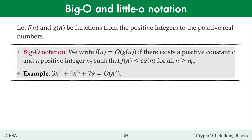In other words, the function values f of n are upper bounded by c times the function values g of n for all sufficiently large n. For example, 3n cubed plus 4n squared plus 79 is big O of n cubed, because for large n the dominant term in this expression is 3n cubed, and we can ignore multiplicative constants in the big O notation.